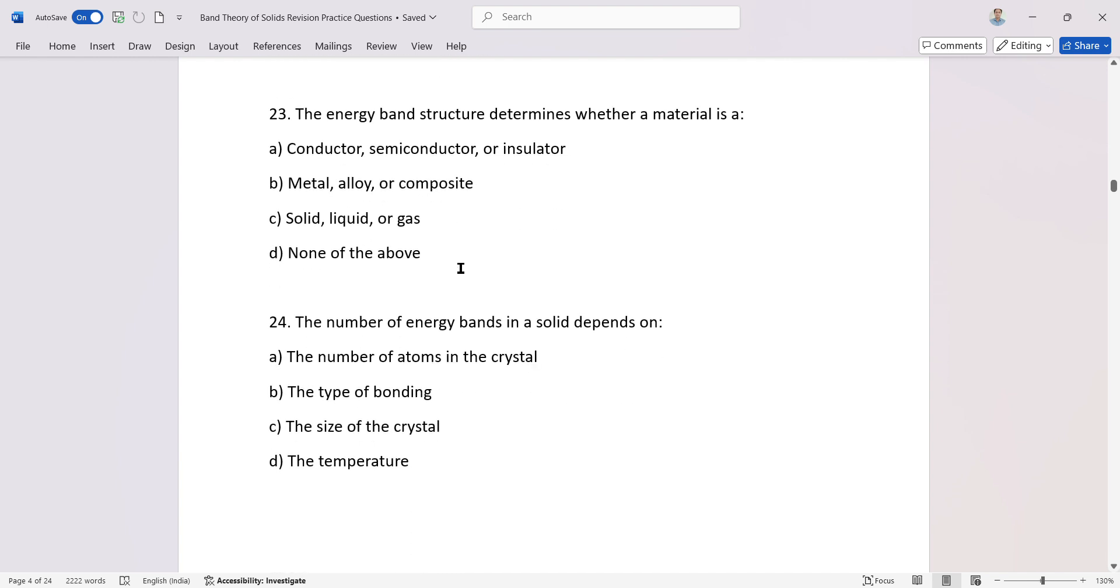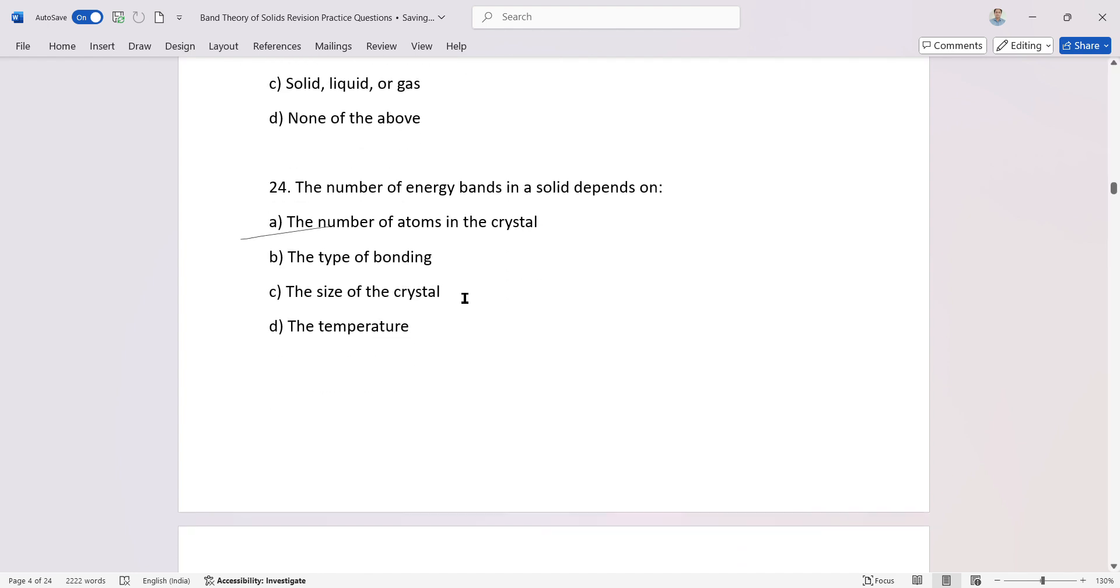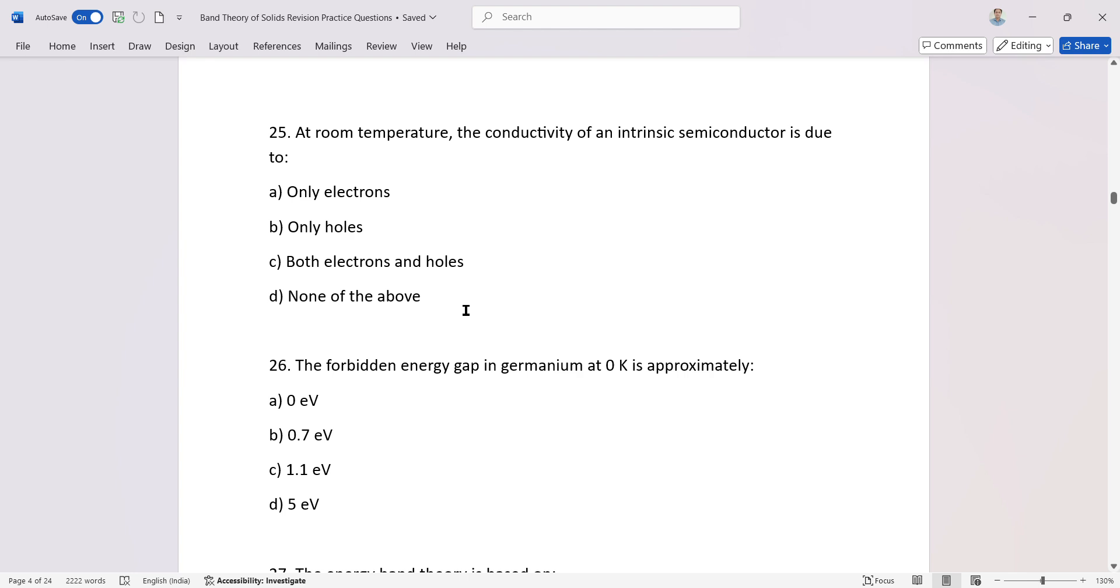The energy band structure determines whether a material is a conductor, semiconductor, or insulator. The number of energy bands in a solid depends on the number of atoms. At room temperature, the conductivity of an intrinsic semiconductor is due to both electrons and holes. The forbidden energy gap in germanium at 0 Kelvin is approximately 0.7 electron volts.